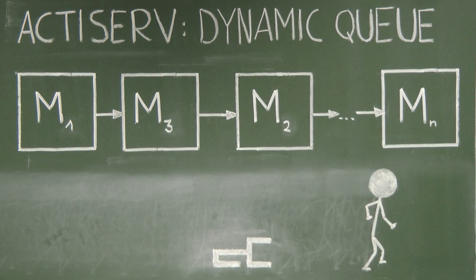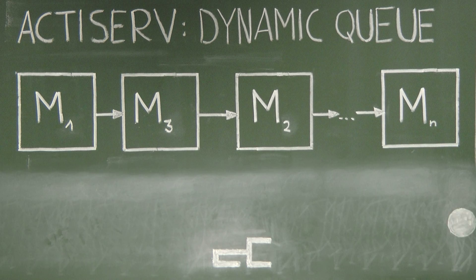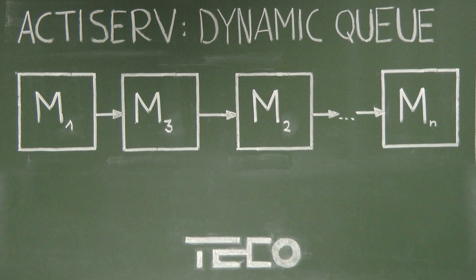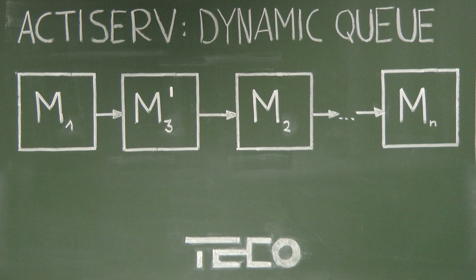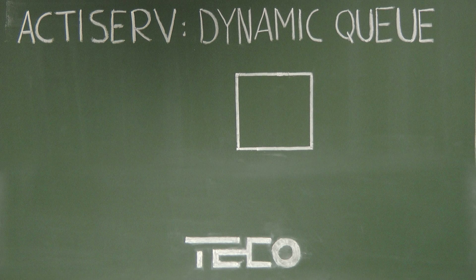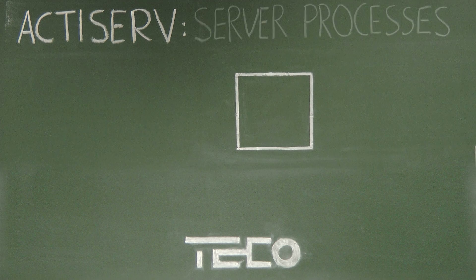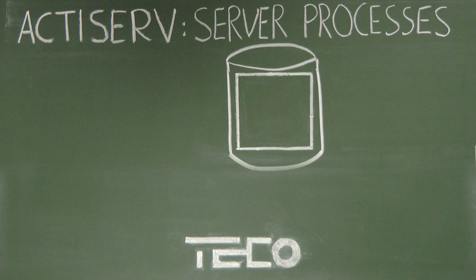The fact that only one module is active at each point in time greatly contributes to energy efficiency. Another benefit of the modular approach is that faulty or badly performing modules can easily be swapped. A collection of modules is stored on a server. This is also where the training takes place. The training data is recorded on the mobile phone of the individual users and is transmitted to a database.